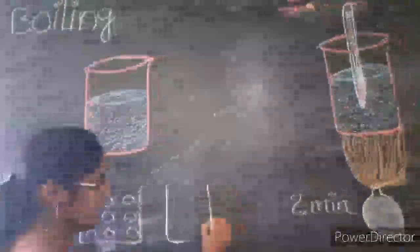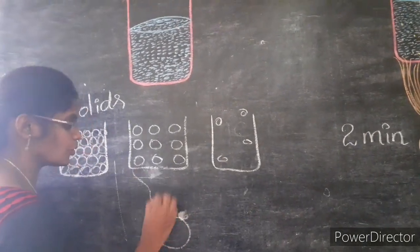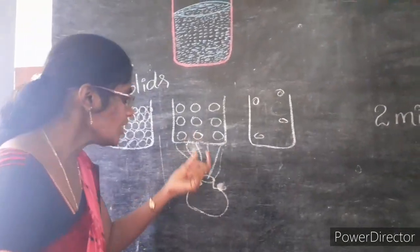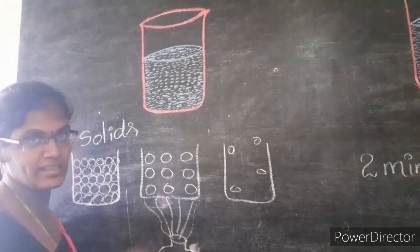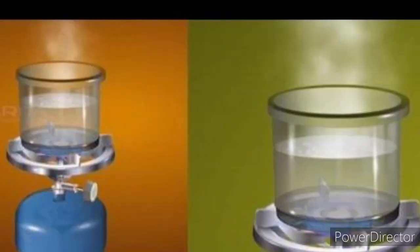In gases, the bond strength between molecules is very, very less than in liquids and solids, and the distance between molecules is also very high. When we supply heat energy continuously to water, the water utilizes this energy to break the bond strength and change its state from liquid to vapor.